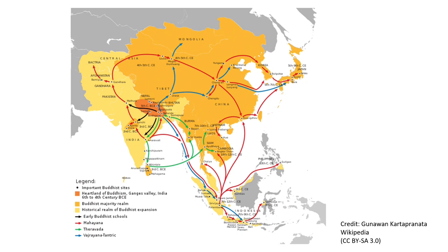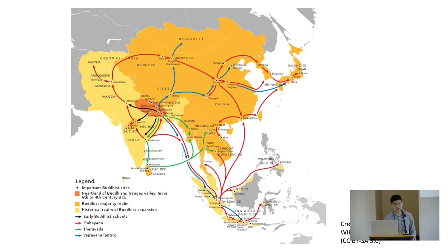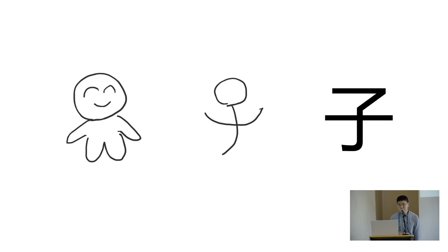That's how Mahayana Buddhism spread from India: from India to Central Asia, then to China, then to Korea, through Korea to Japan, and also to Vietnam. These countries truly share the common Chinese character culture, Confucianism, and related traditions. From Tibet, you can see the blue lines — Tibet received direct influence from India, which I'll talk about a little later.